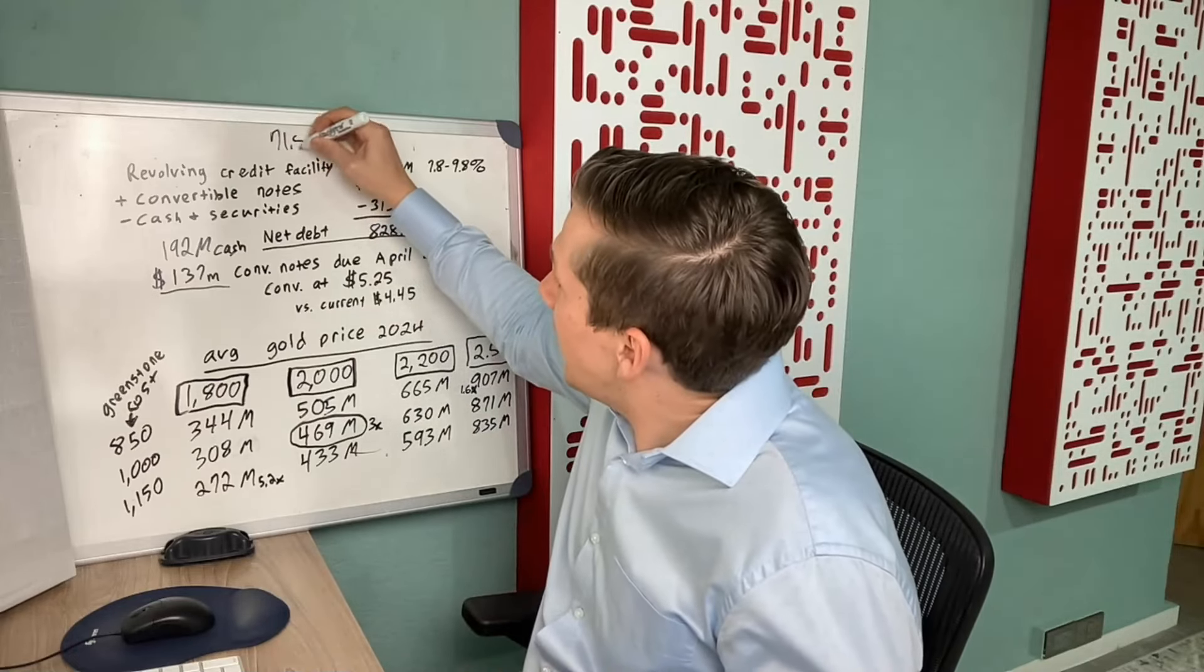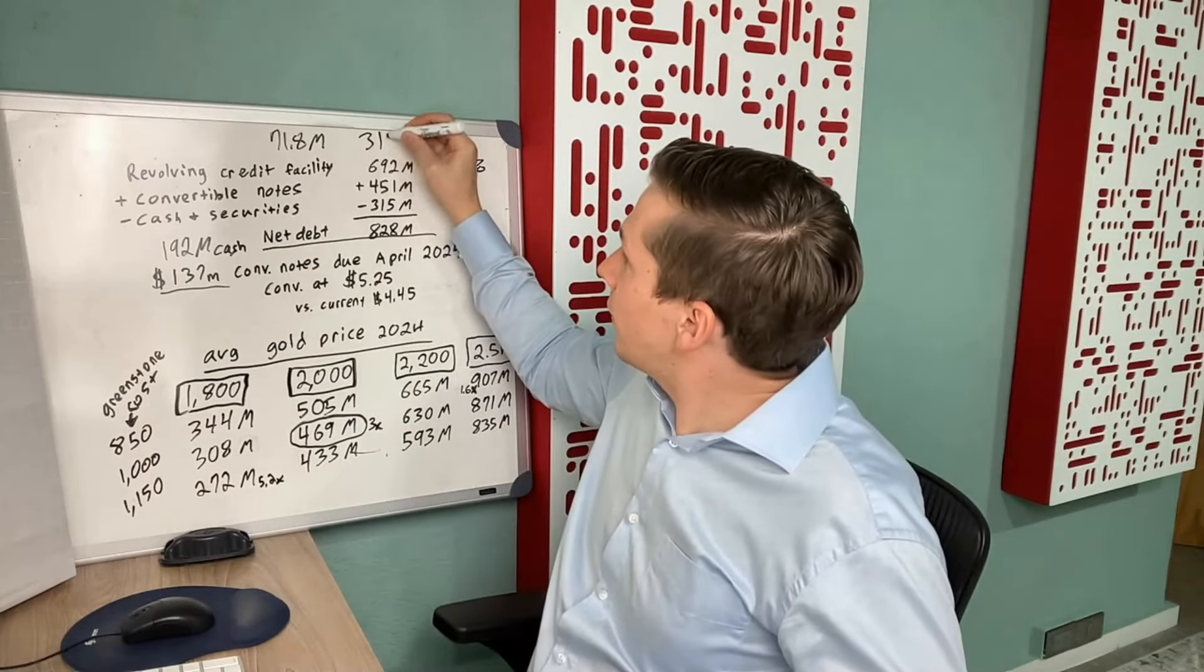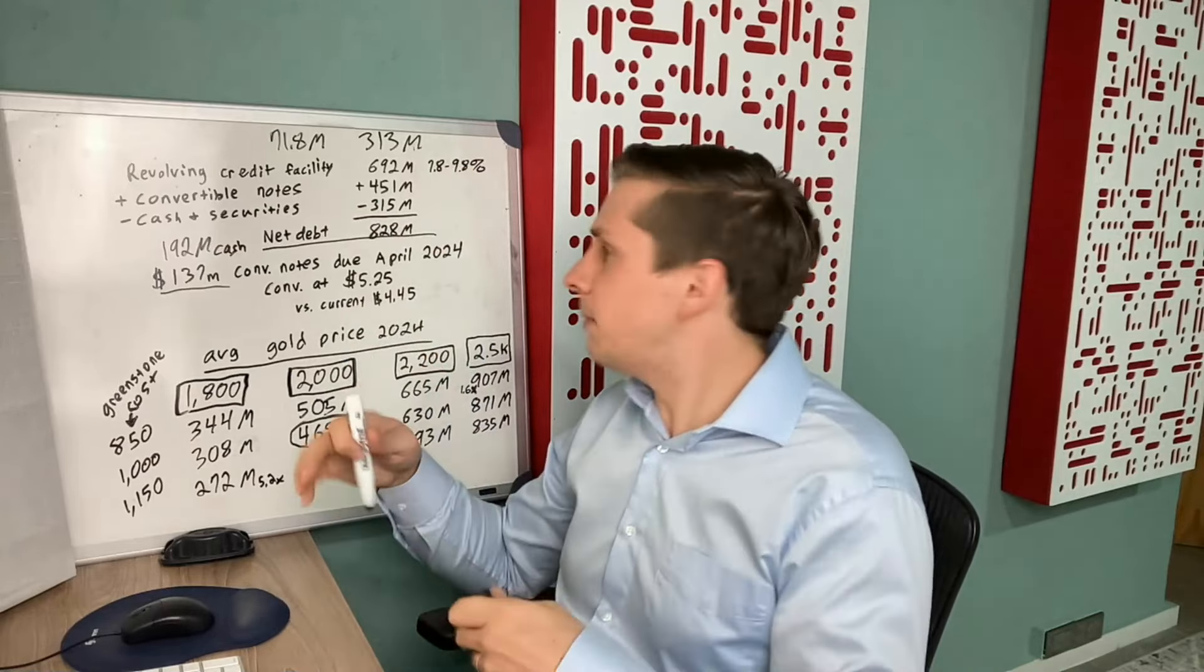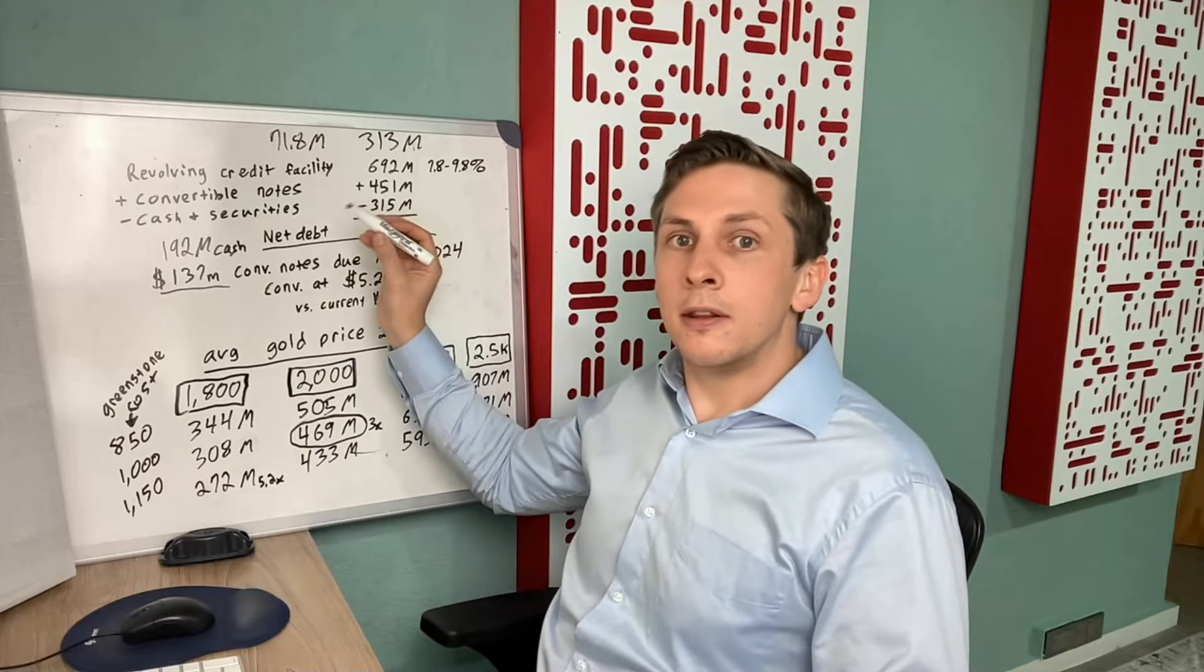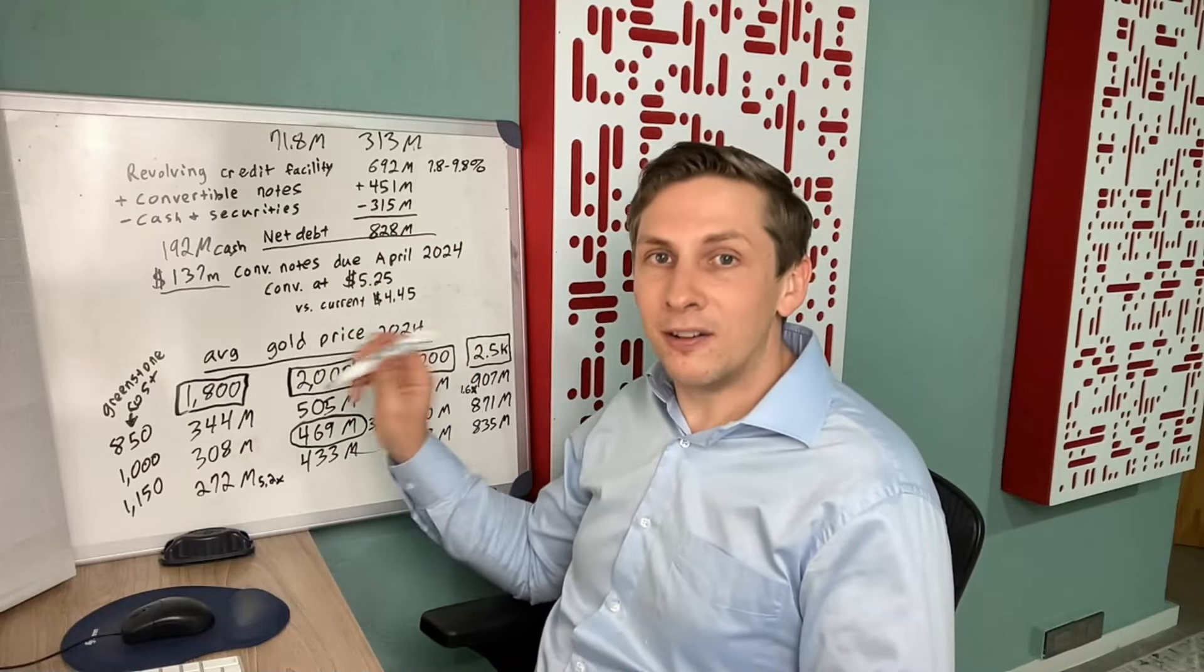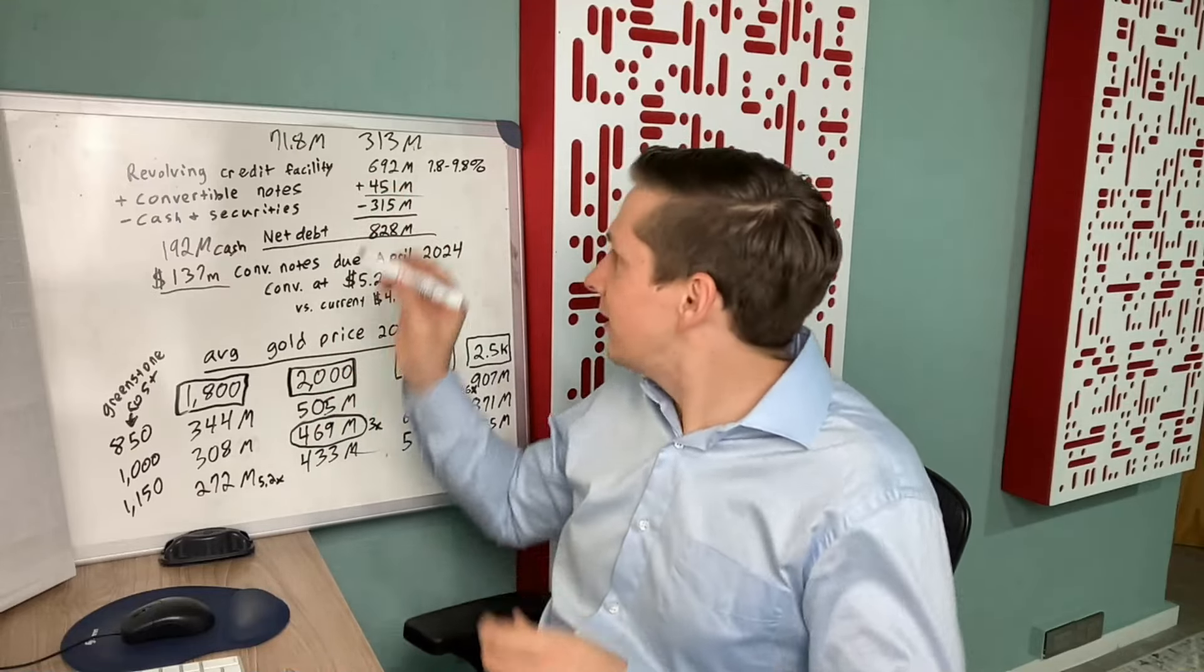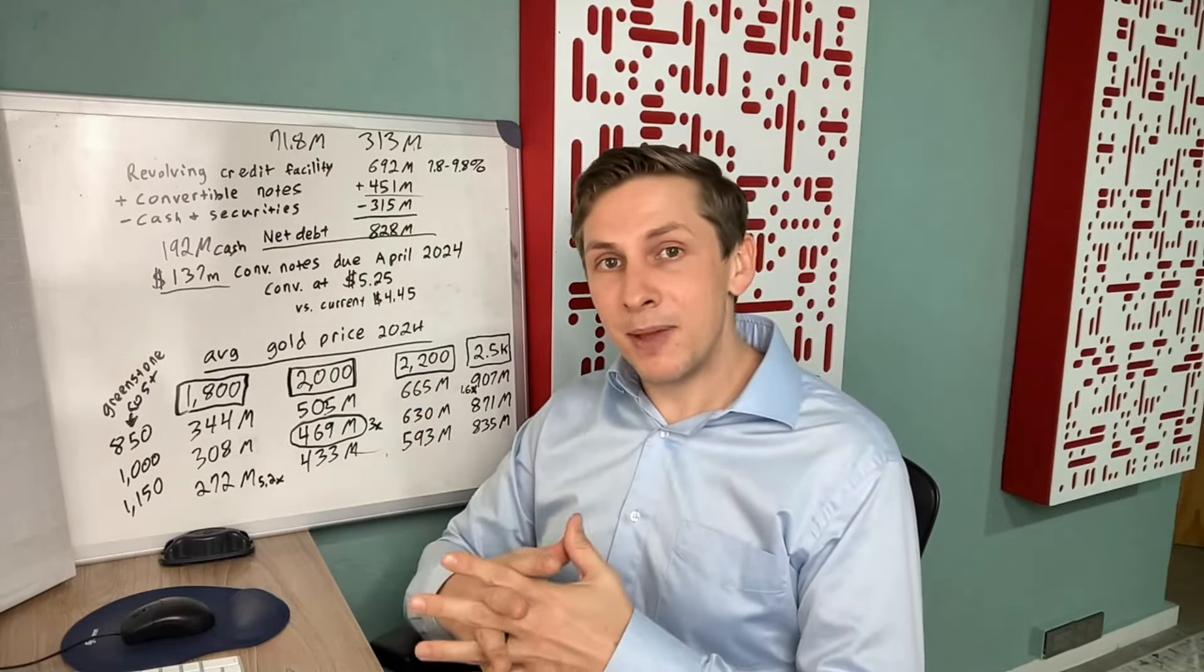Currently there are 313 million shares. However, we could see a potential expansion of shares because there's a few options out, but the big thing is these convertible notes. They could be converted into shares if the stock price of Equinox goes up. Now these are all out of the money right now, so if the stock price stays where it's at, none of these are going to turn into shares.